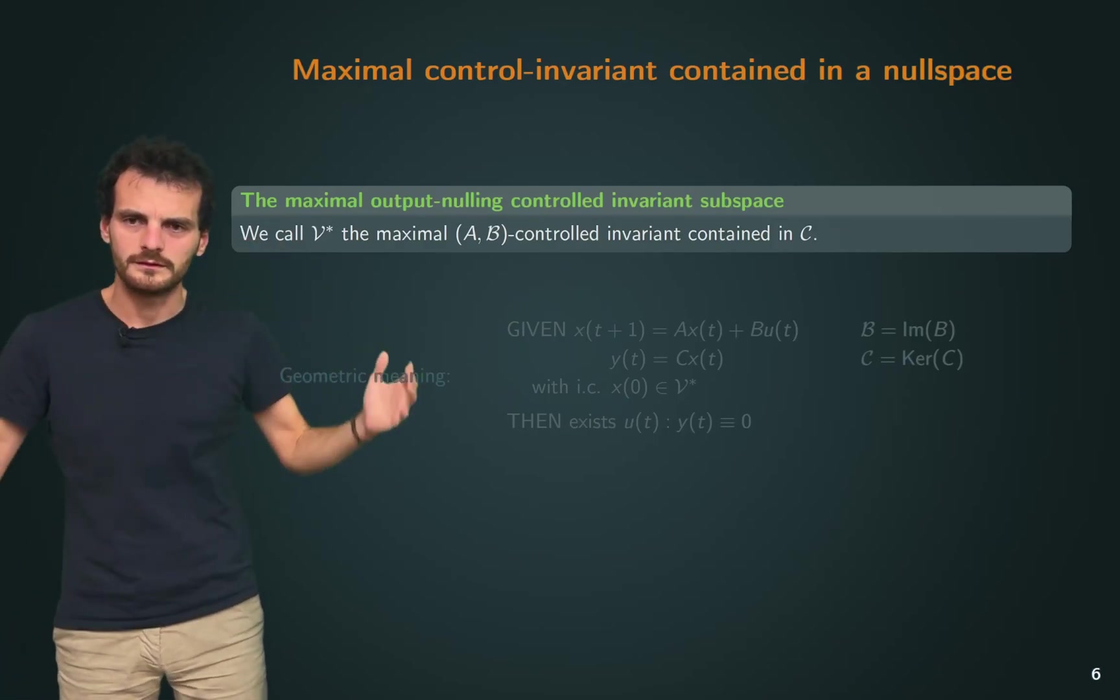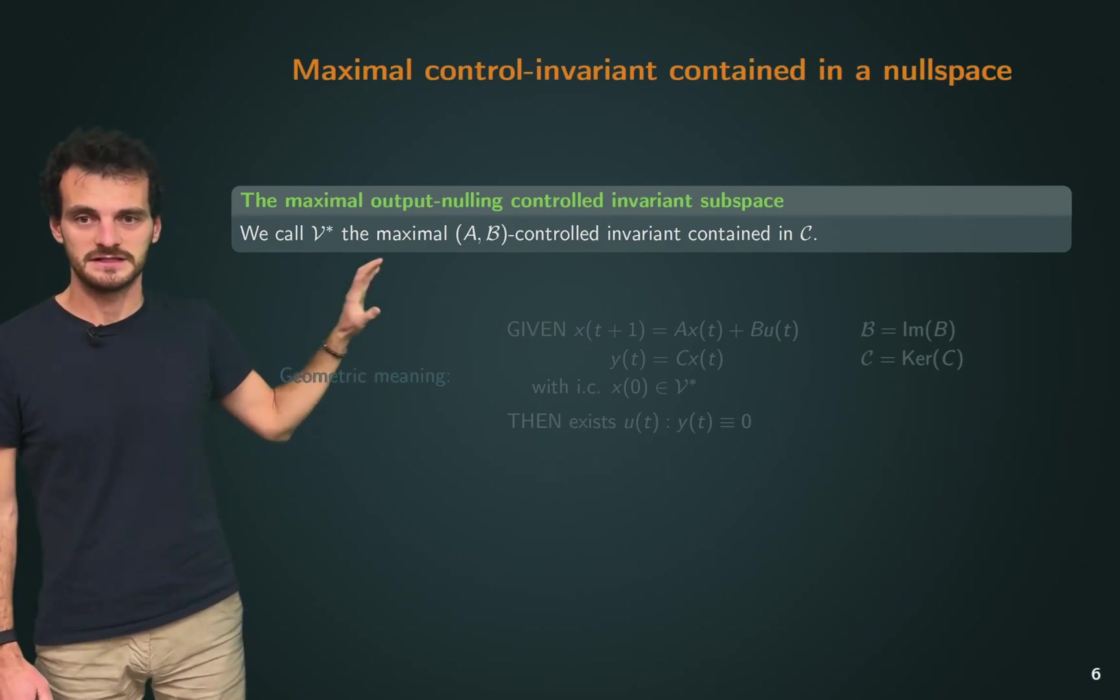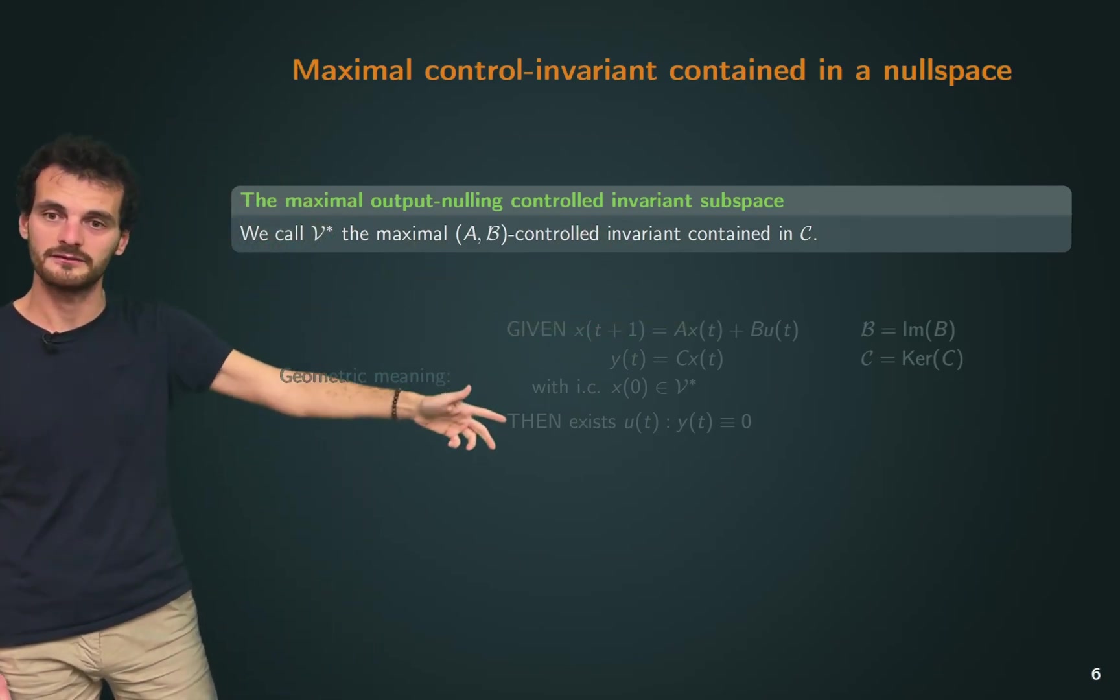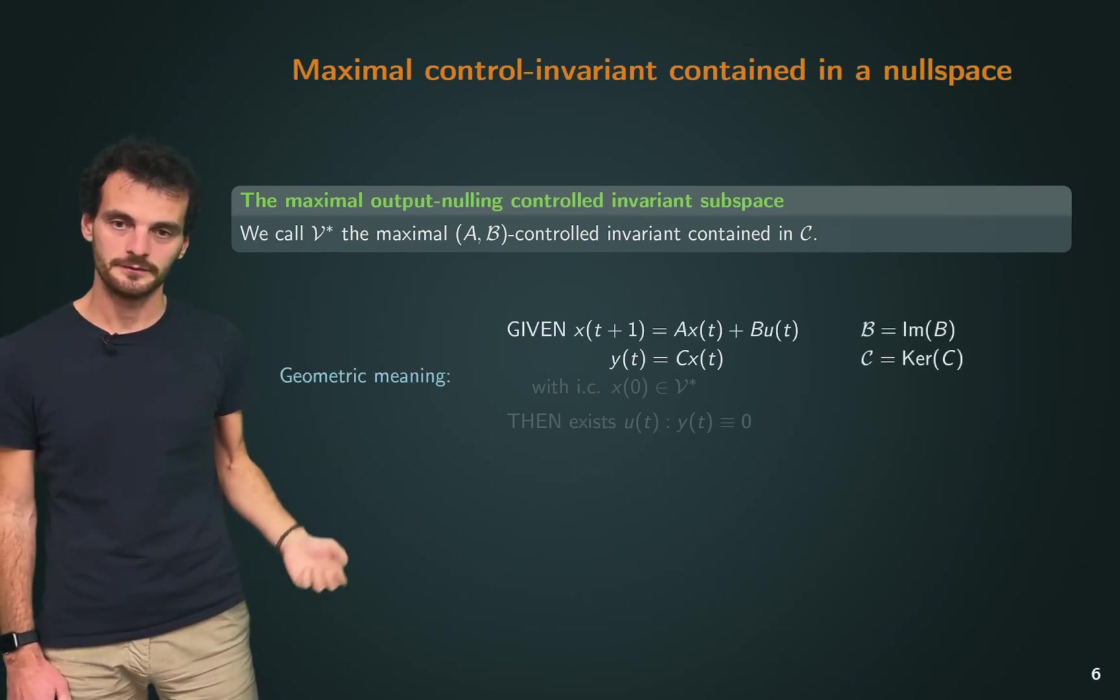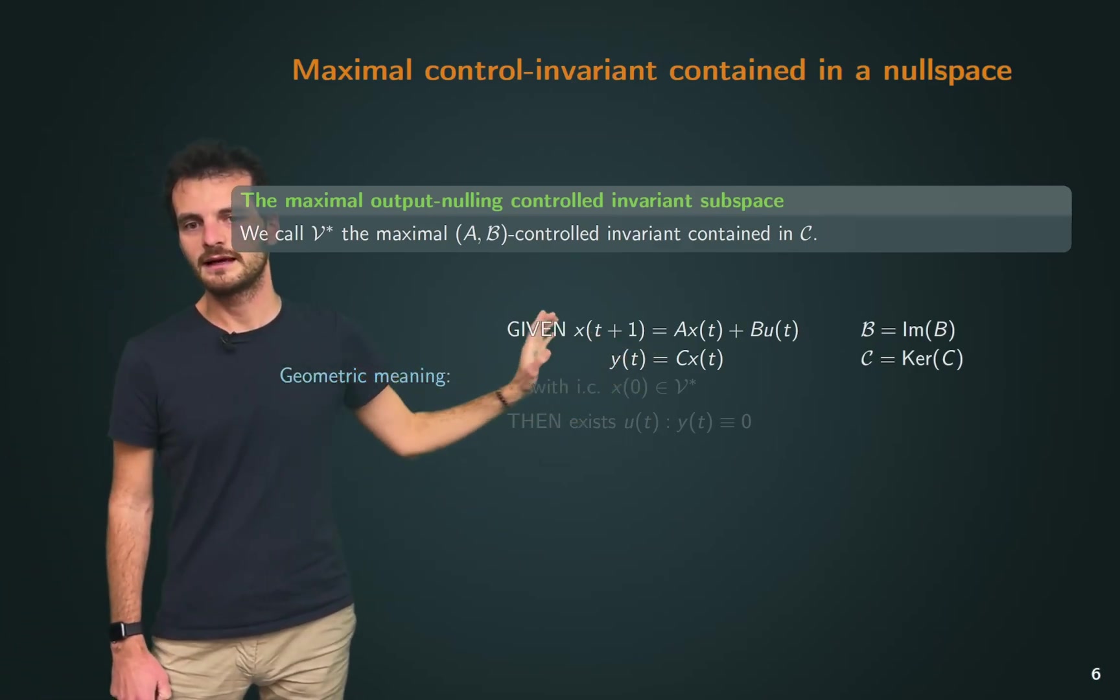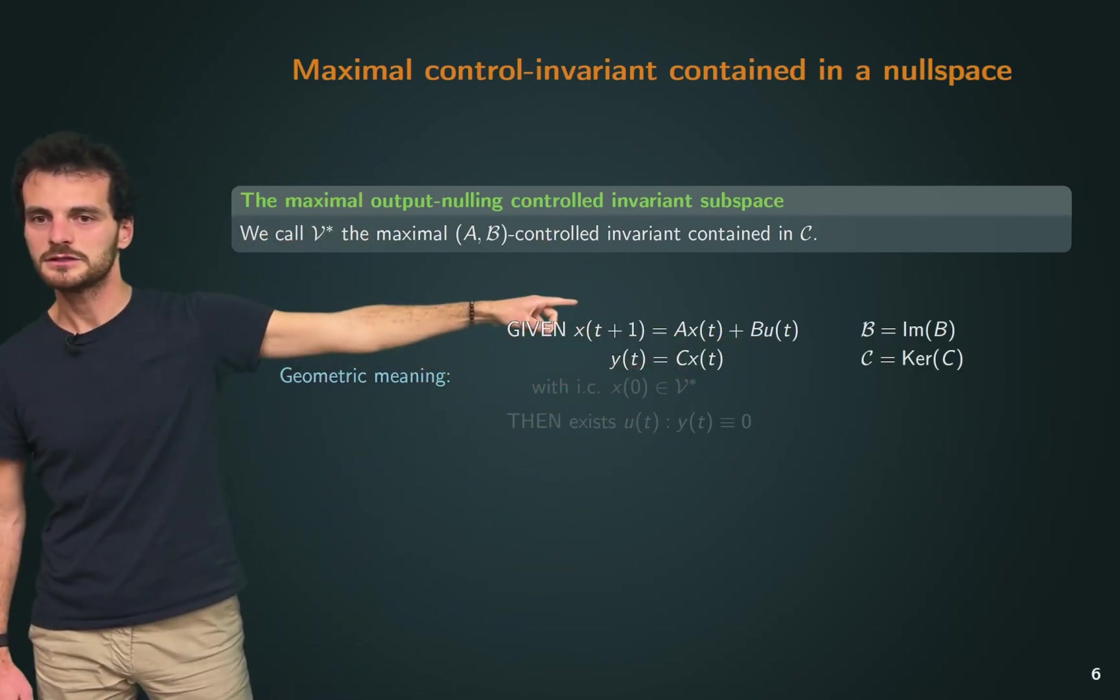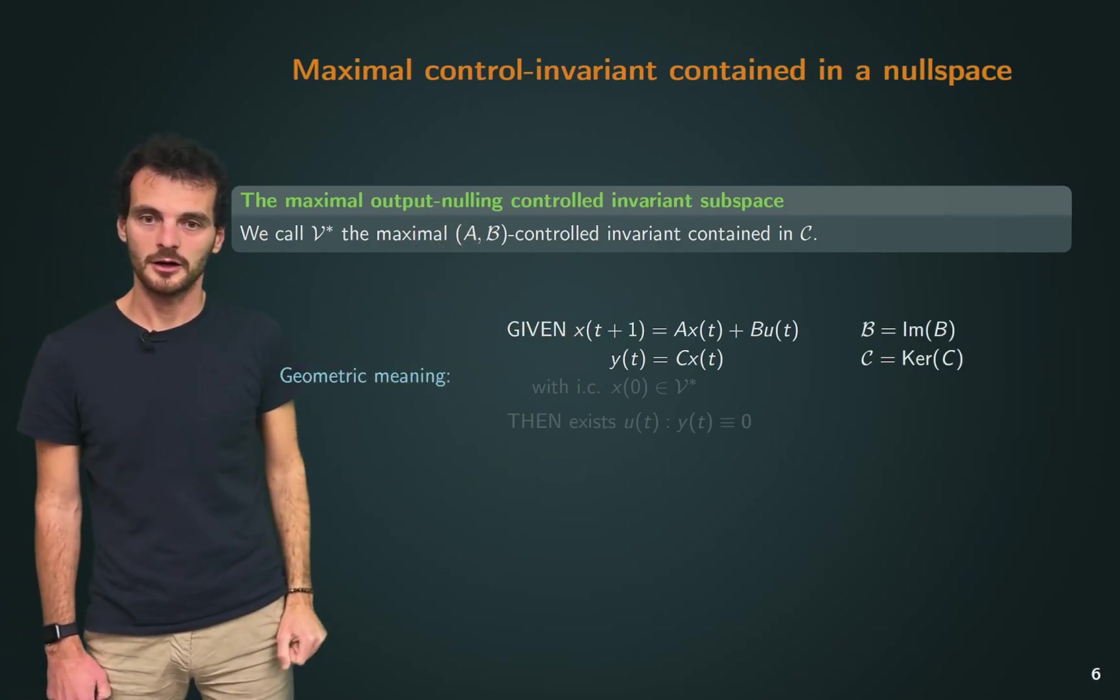Among all the (A,B)-controlled invariants in our system, we're interested in V*, which is the maximal (A,B)-controlled invariant contained in calligraphic C. And calligraphic C is the null space of our output matrix. The geometric meaning of this is pretty intuitive. If we have a dynamical system evolving in discrete time like this one, and we pick calligraphic B to be the image of our input matrix, calligraphic C to be the null space of our output matrix.